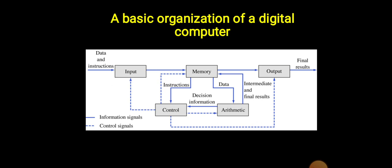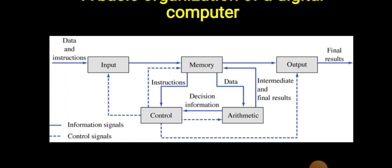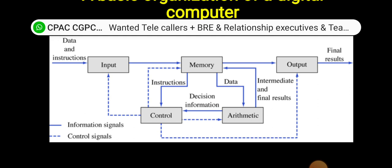It's the basic organization of digital computers. Digital computer diagram. Please note it. Input: data and instruction. Memory has two sections: instruction and data. First one is control, another one is arithmetic. Memory connects to instruction and control, arithmetic, and data.